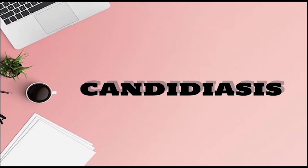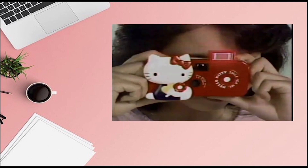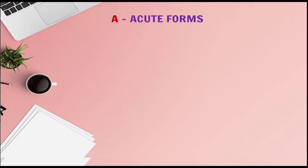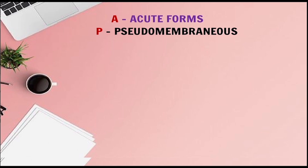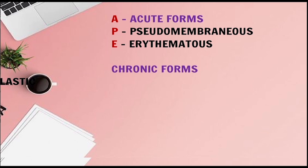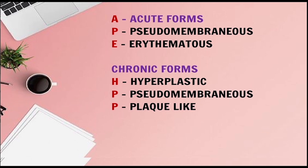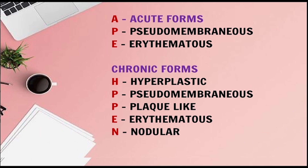Now coming to the next classification — Candidiasis. The mnemonic is: 'a photograph of two apes with the HP pen.' Acute forms: APE — A for Pseudomembranous Candidiasis, E for Erythematous Candidiasis. Chronic forms (HP PEN): H for Hyperplastic, P for Pseudomembranous, P for Plaque-like, E for Erythematous, N for Nodular Candidiasis.